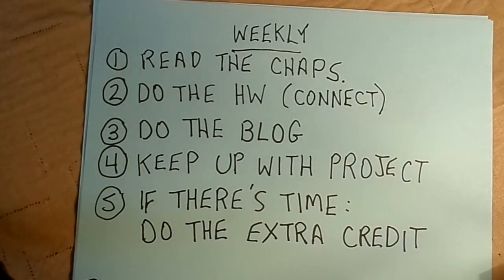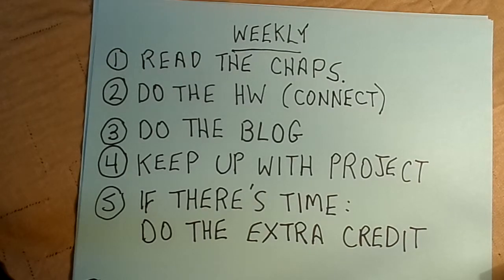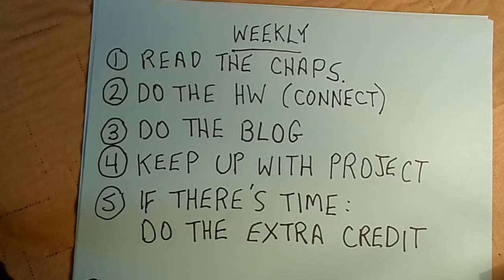Here are the weekly things to keep on top of. The class is fast-paced — it ends in ten weeks rather than sixteen. First, read the chapters, then do the homework: the assigned LearnSmart and Connect. Then do the blog. These blogs are not trivial — they require several paragraphs and follow a rubric. They'll help you understand accounting better and prepare you for the test. Each blog is worth 100 points.